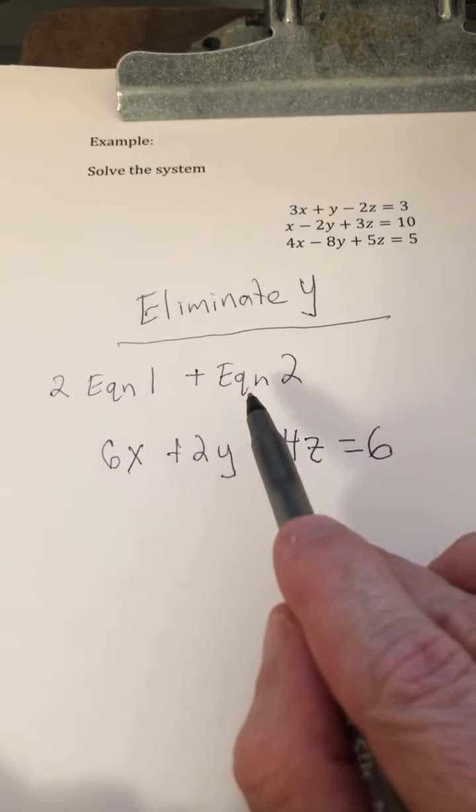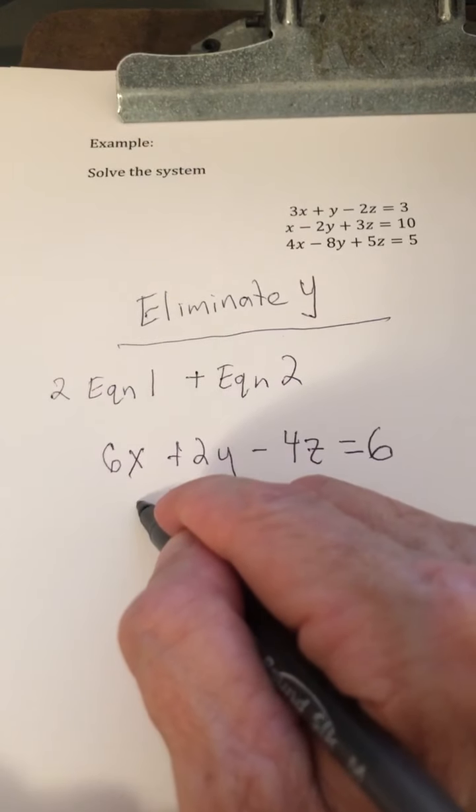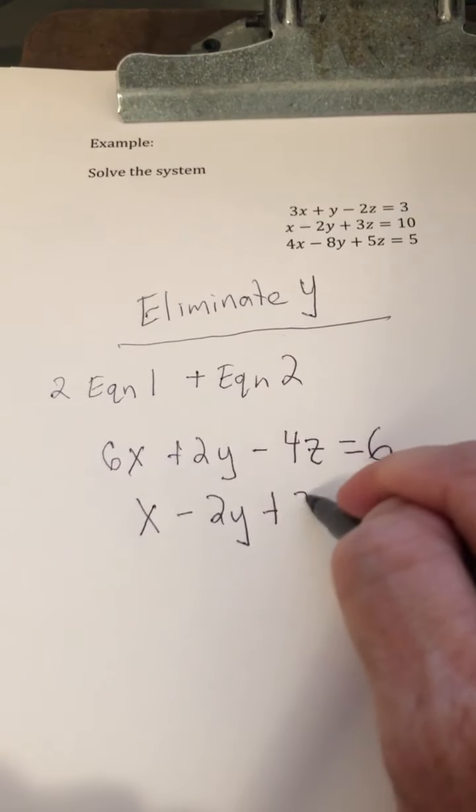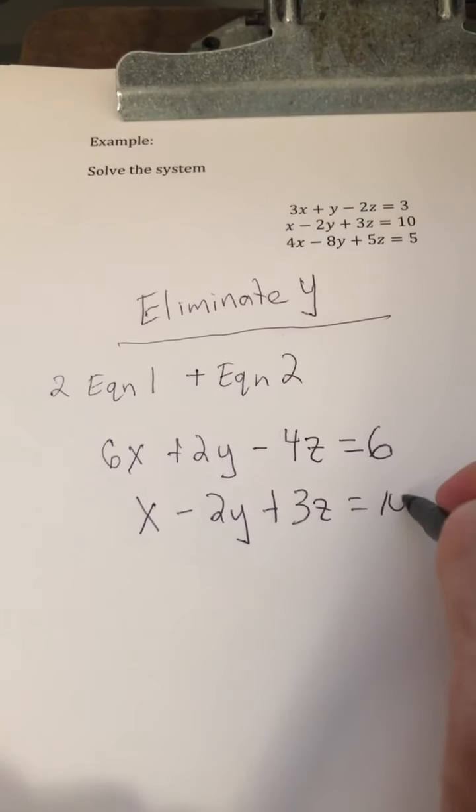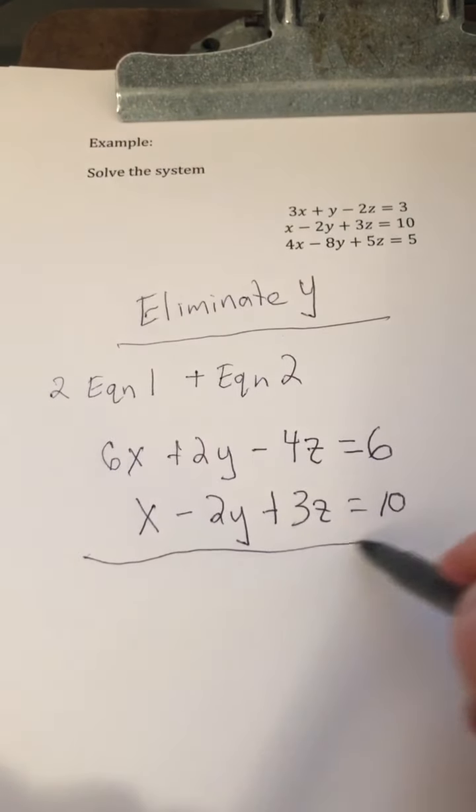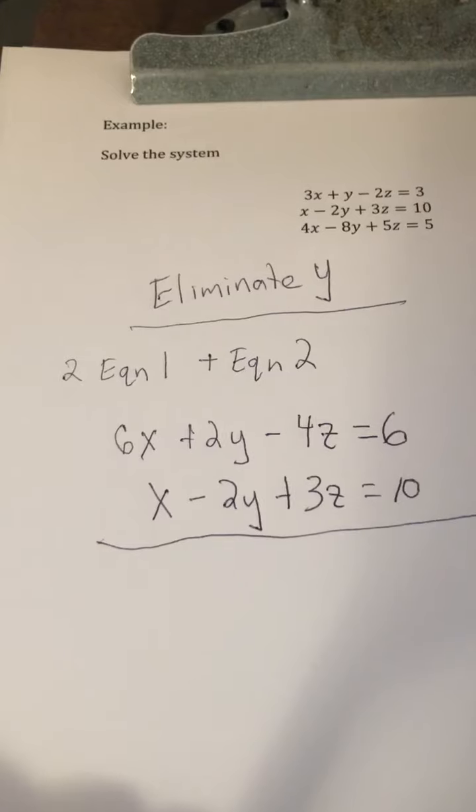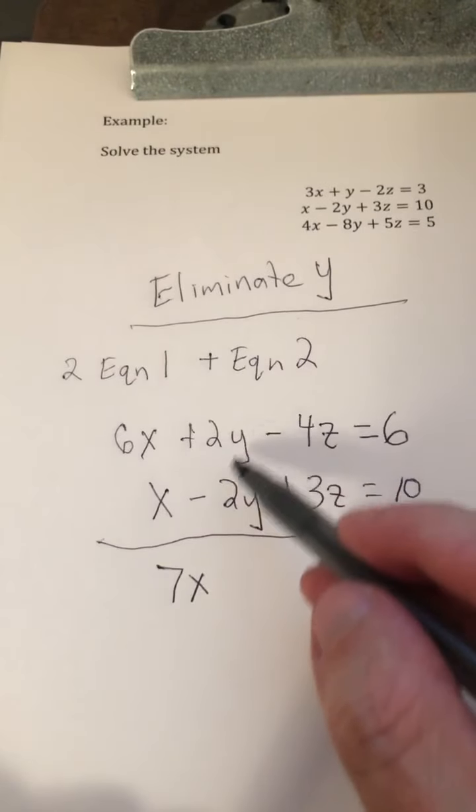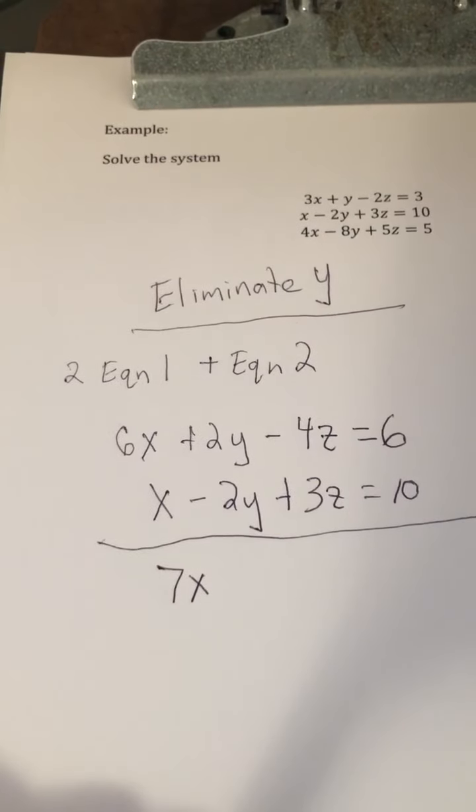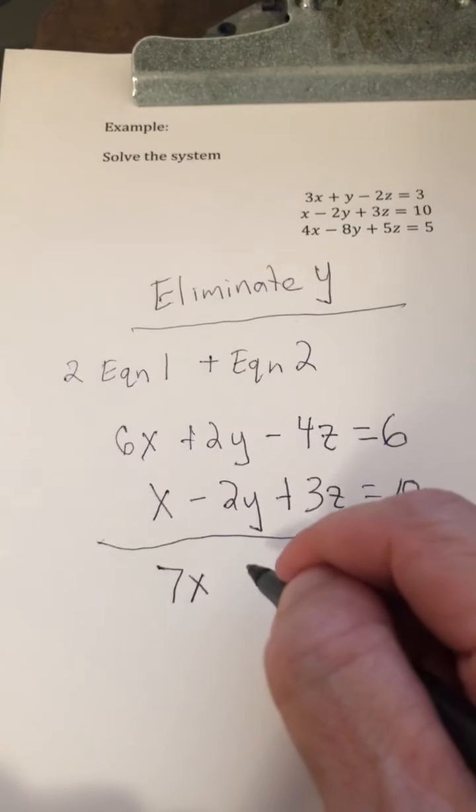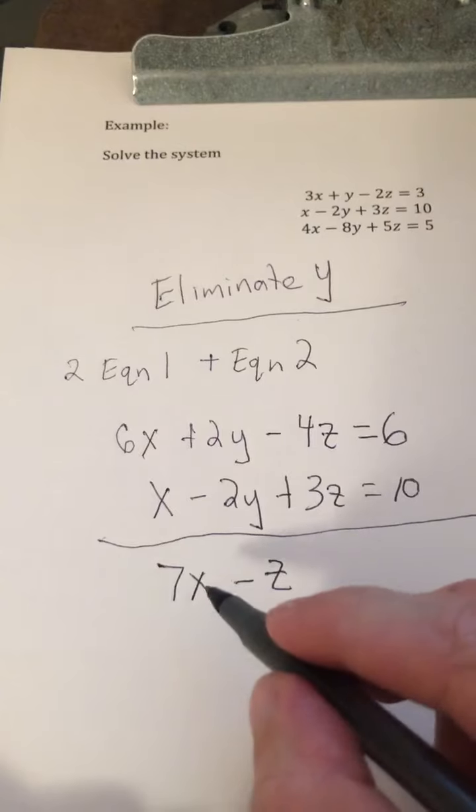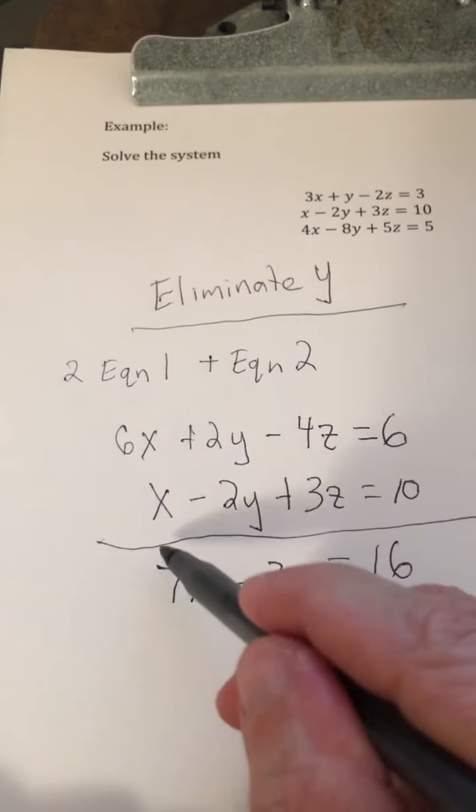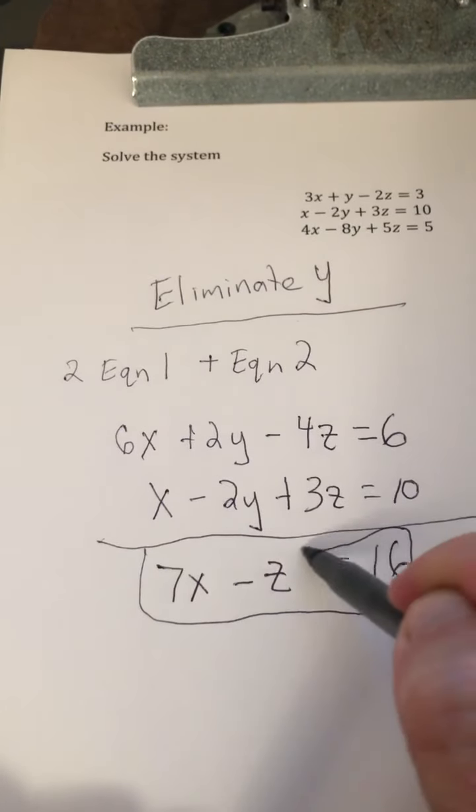Now we're just adding equation 2, so I'm just going to copy down equation 2. Equation 2 is x minus 2y plus 3z equals 10. Now when I add these two equations, notice what happens. The y's go away, and that was the whole point of this. 6x plus x is 7x. 2y minus 2y is 0y, which is 0. Negative 4z plus 3z is minus 1z. So we have 7x minus 1z equals 6 plus 10, which is 16. So here's one equation involving x and z.